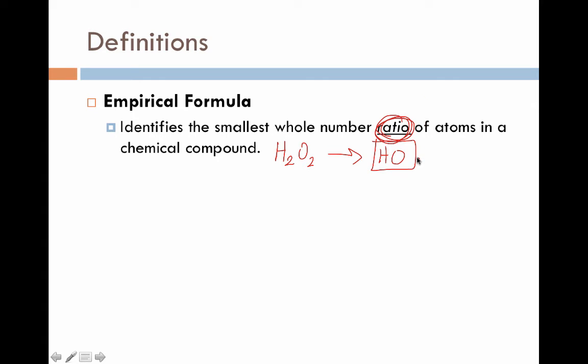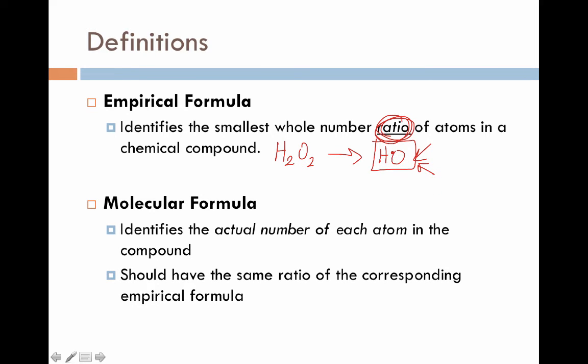So the combustion analysis process is going to spit out this empirical data information. What you're going to want to do is translate your empirical formula into what's known as a molecular formula. A molecular formula identifies the actual number of each atom in the compound itself. H2O2, for example, is a molecular formula that matches the empirical formula HO. The key here is that your molecular formula should have the same exact ratio as the corresponding empirical formula. The empirical formula is the first stop to identify the ratio, and the molecular formula is the actual one that represents what the compound's really made of.